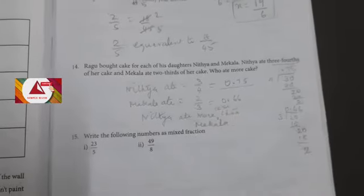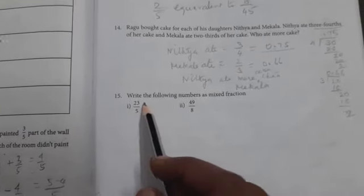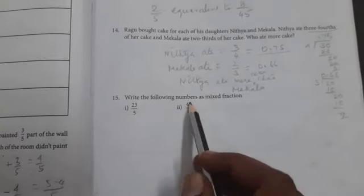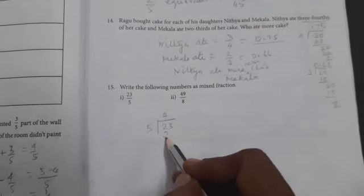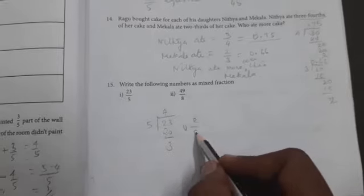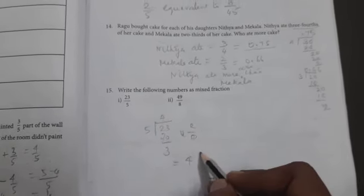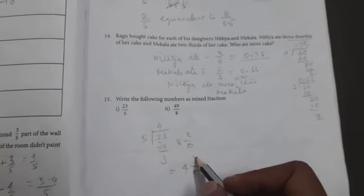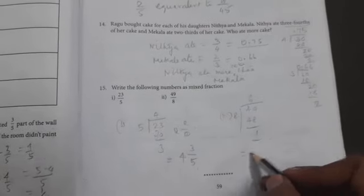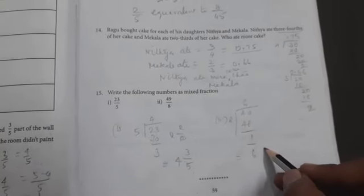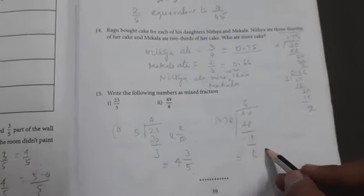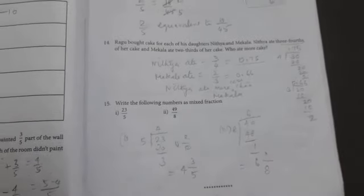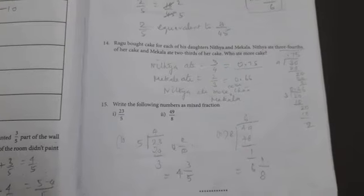Next question number 15: Write the following numbers as mixed fractions. 23 by 5: 4 times 5 is 20, remainder 3, so four and three by five. 5 times 5 is 25, but we have 23, so four remainder three, equals four and three by five. Next, 49 by 8: 6 times 8 is 48, remainder 1, so six and one by eight. 6 times 8 is 48, 48 plus 1 is 49 by 8.